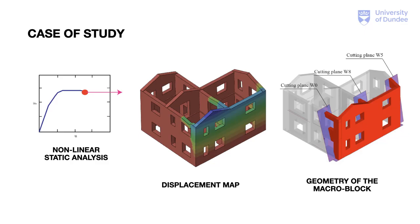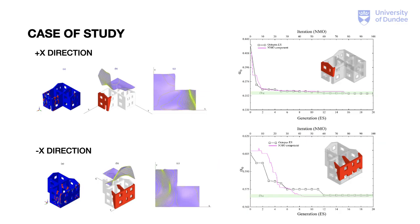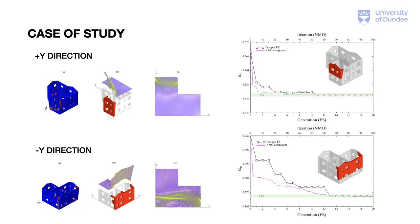Positive and negative orientations for the horizontal thrust are discussed. Here are reported the damage pattern obtained from the preparatory step, the control surface that identifies macro blocks and their top view. It should be noted that the optimization algorithm finds convergence after just 20 iterations. The same consideration for the positive and negative y-direction can be done.